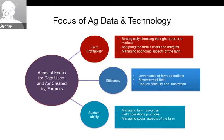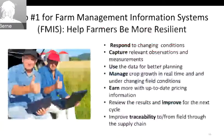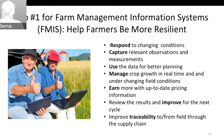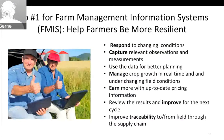Third, sustainability — managing your resources, the practices you use for field operations, and the social aspects of your farm, making sure you're farming in a sustainable way. Job number one for farm management information systems is to help you be more resilient: respond to changing conditions, capture relevant observations and measurements, use data for better planning, manage crop growth in real time under changing field conditions, earn more with up-to-date pricing and information, and improve traceability.